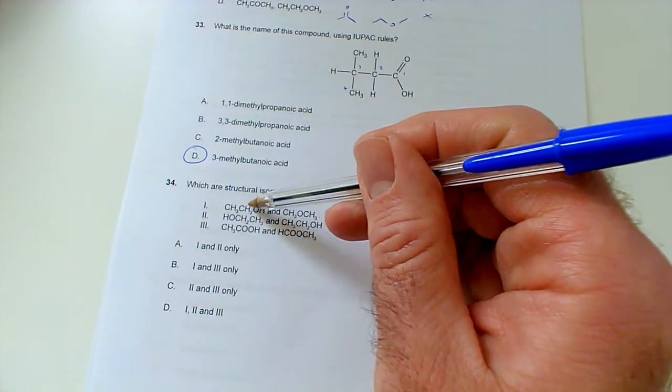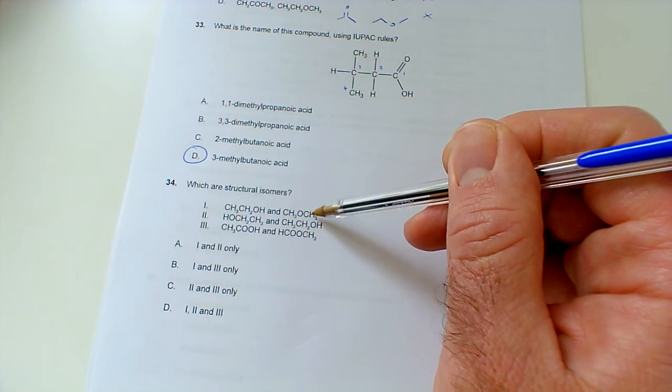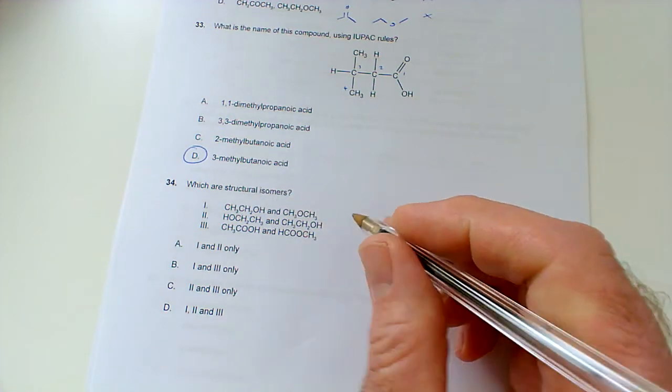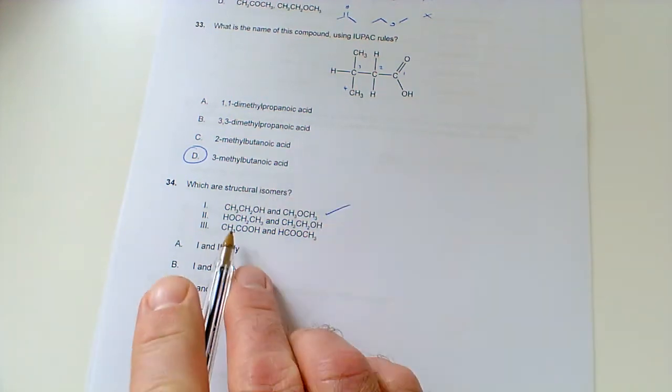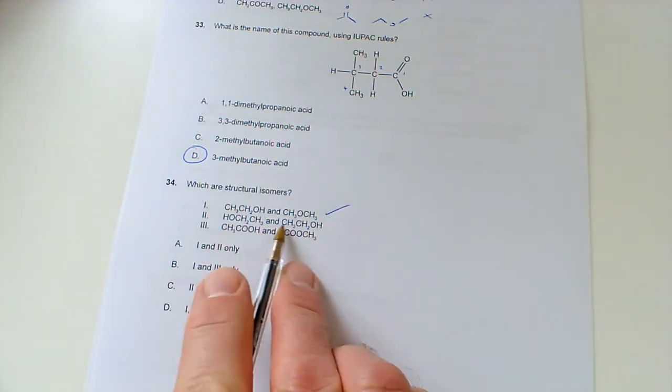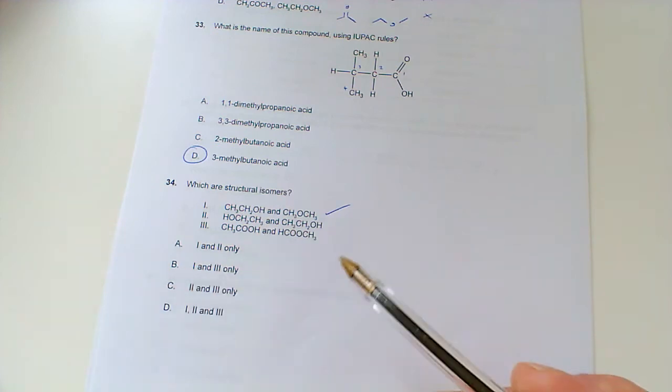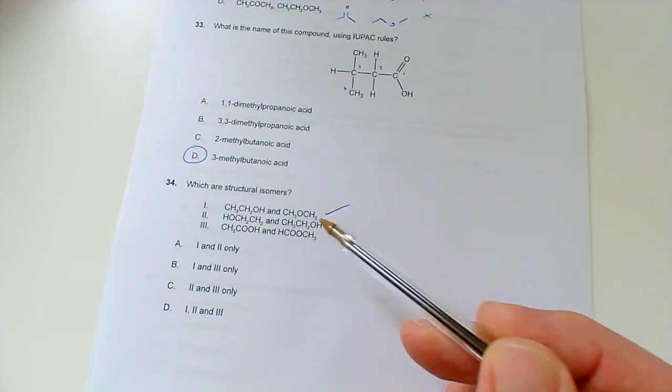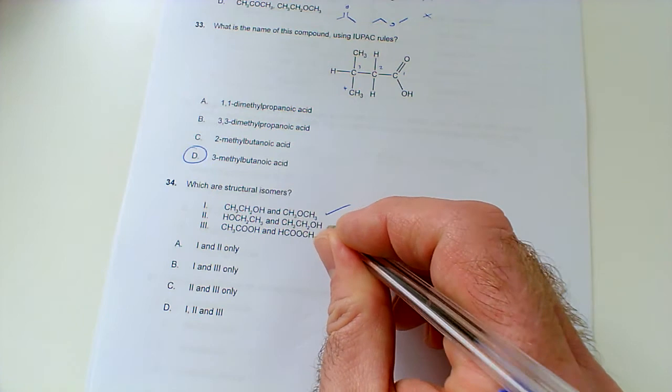Which are structural isomers? Well, we've got ethanol and methoxy-methane. So, those are structural isomers of each other. That works. This one, they've just written it differently. They're both ethanol, basically. It's just they've kind of drawn this molecule kind of the other way. So, not that one, because they're the same molecule.